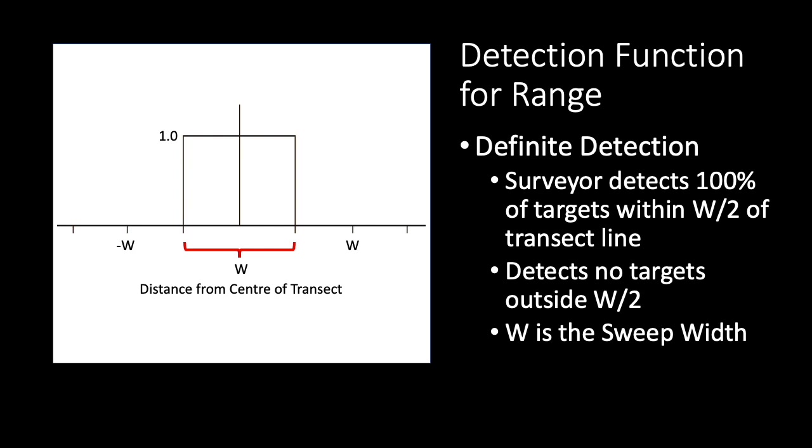There are also detection functions to represent the relationship between the probability of detection and the distance between the observer and the target. The one you see here is a model called the definite detection model. It's the simplest and least realistic model, as it represents the assumption that surveyors will find all the artifacts within a certain distance of their transect and none at all outside that distance. The sum of those distances to left and right of the transect is represented here by W, which means the sweep width.